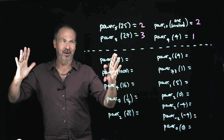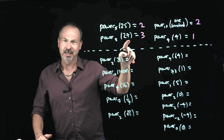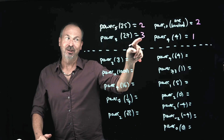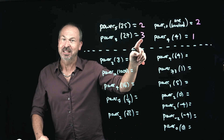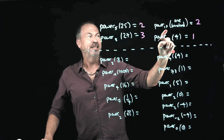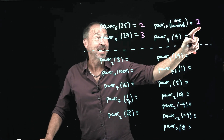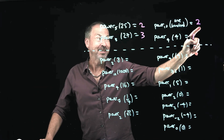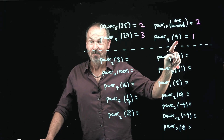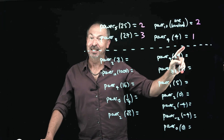Let's keep going, see if that works. The power of 3 that gives the answer 27 — well, 3 to the 3 does give 27: 3 times 3 times 3 is 27. The power of 10 that gives the answer 100 — 10 squared is 100, 10 to the second power. The power of 4 that gives the answer 4 — 4 to the 1 is 4.